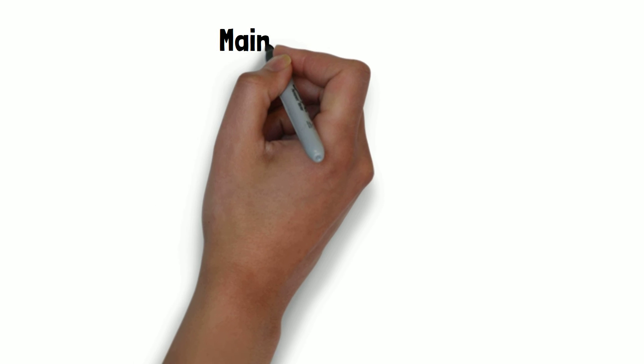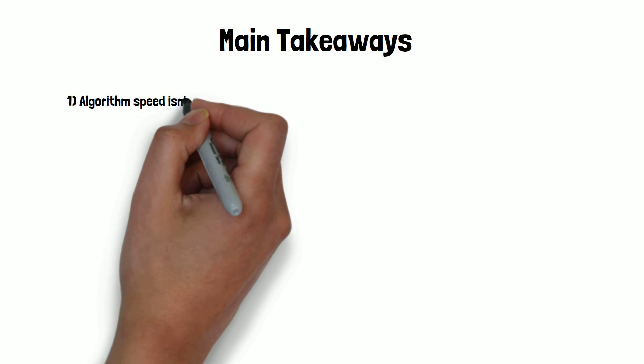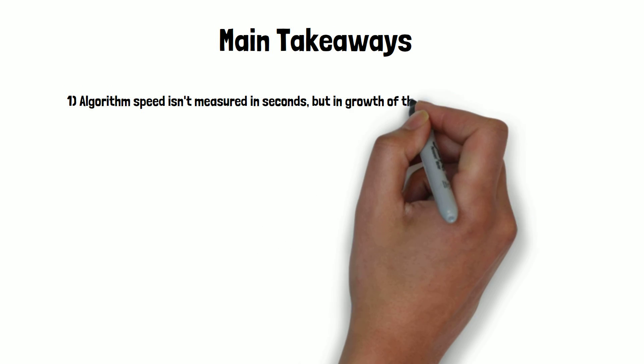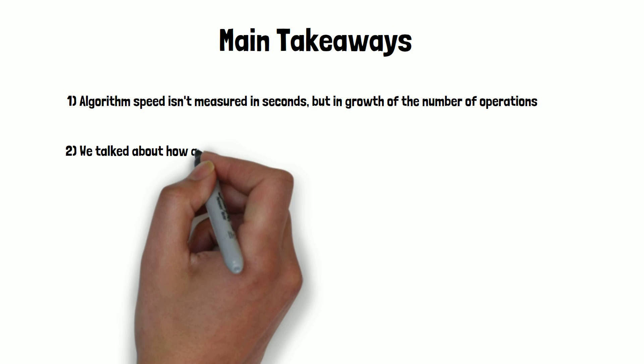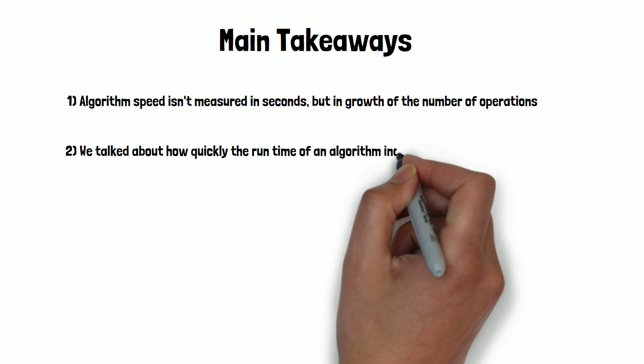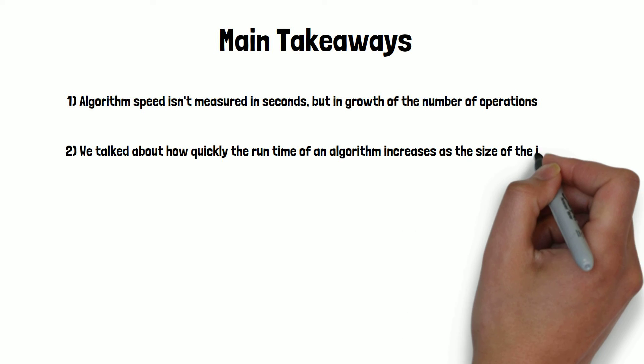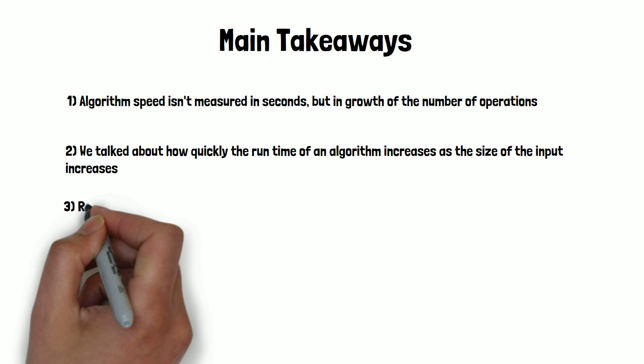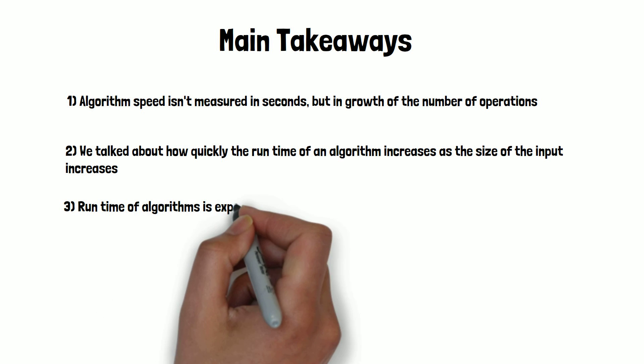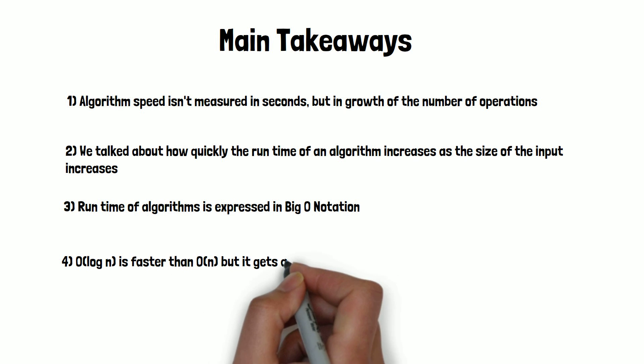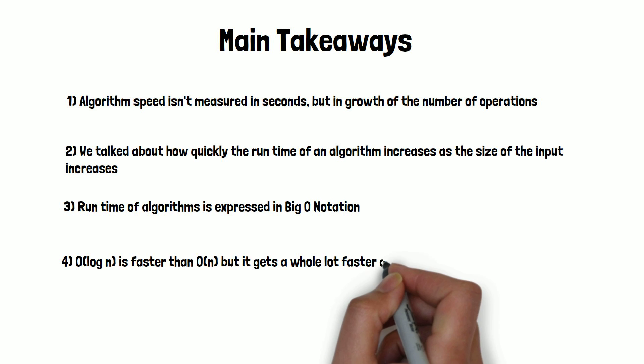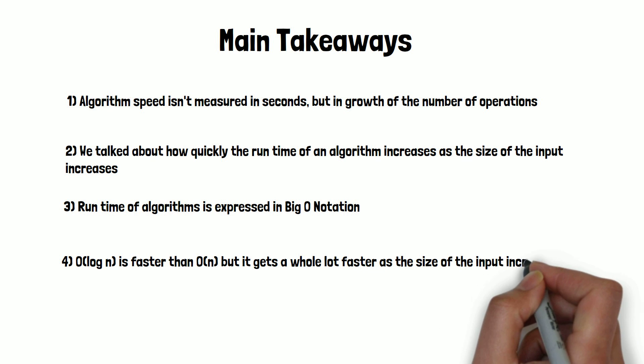Now, let's move to the main takeaways from this video. First, algorithm speed isn't measured in seconds, but in growth of the number of operations. Second, we talked about how quickly the runtime of an algorithm increases as the size of the input increases. Third, runtime of algorithms is expressed in Big O notation. Lastly, O(log n) is faster than O(n), but it gets a whole lot faster as the list of items you are searching grows.